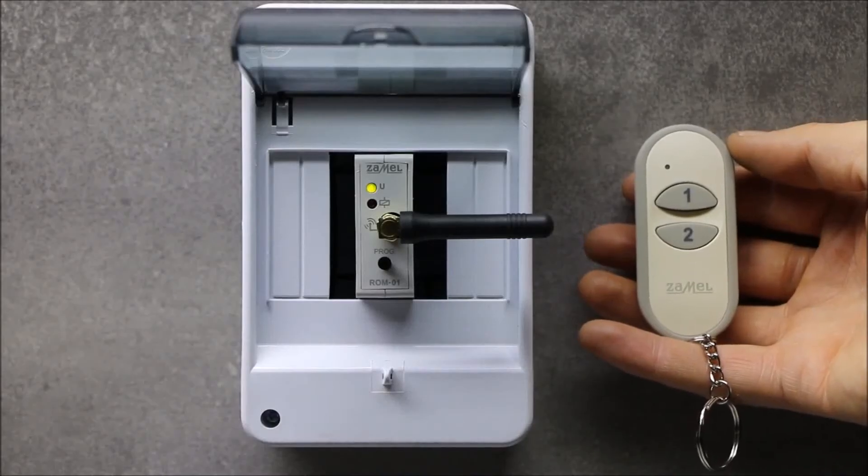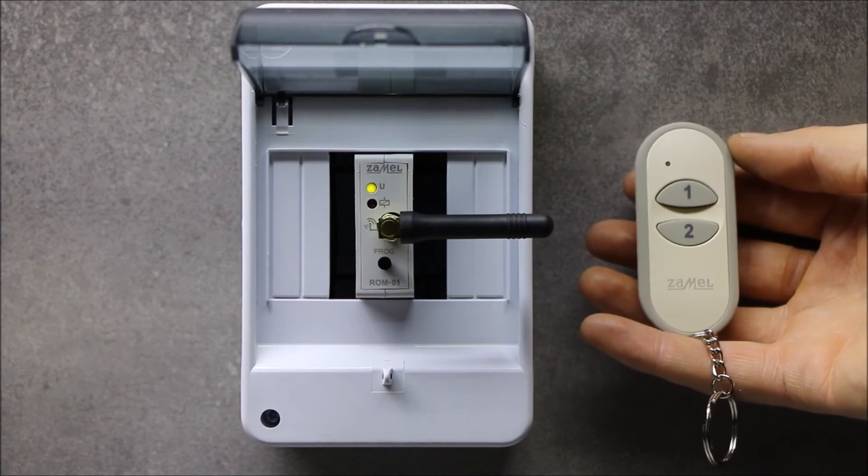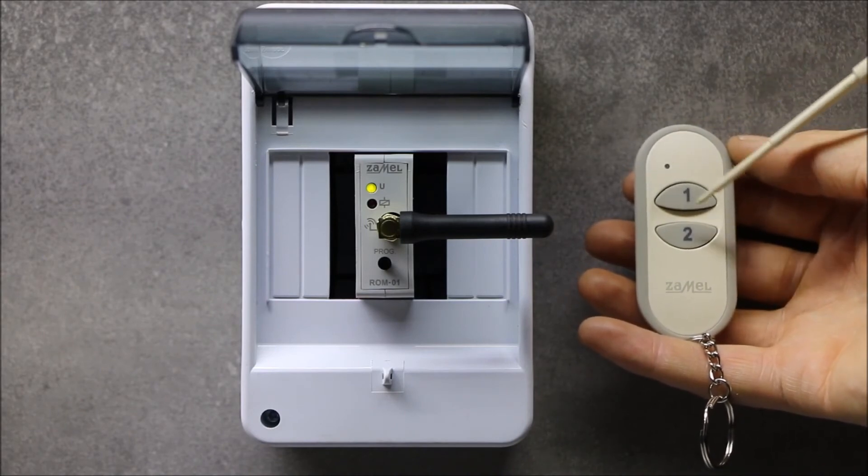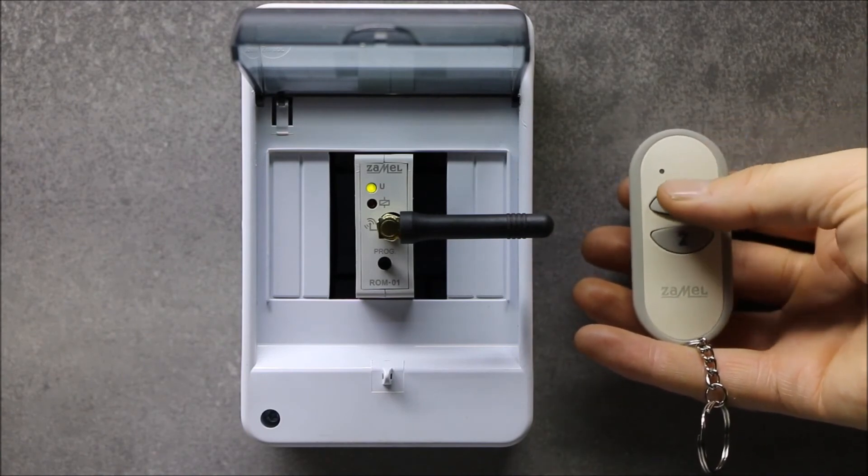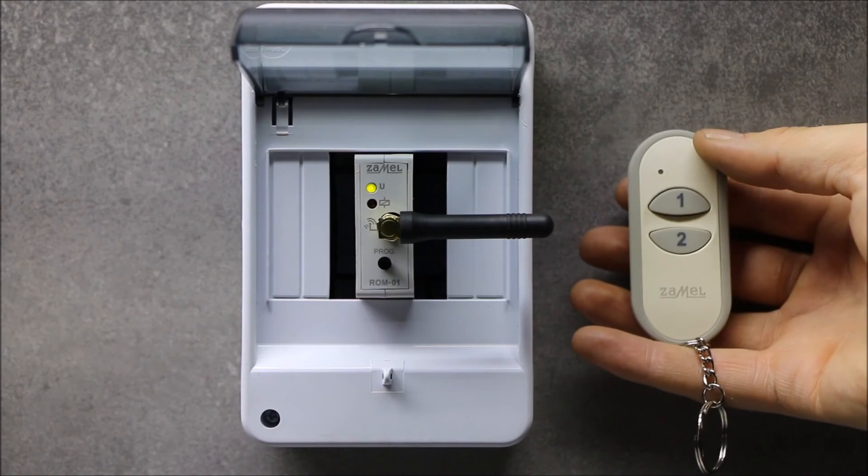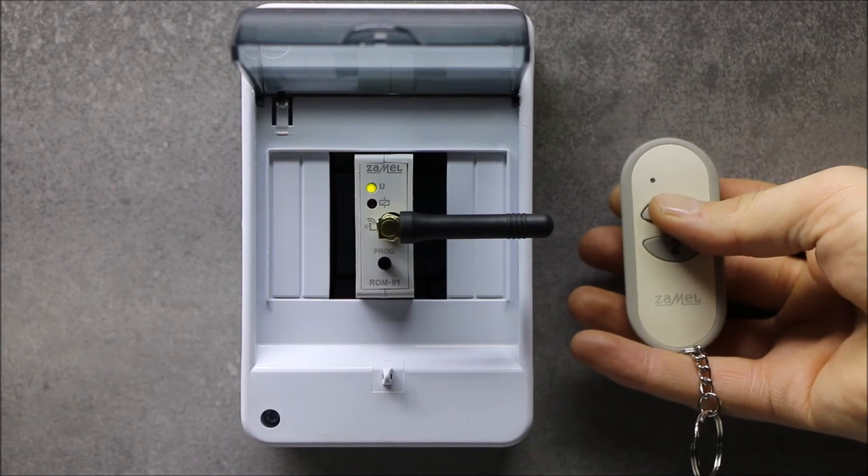In order to program the mono-stable mode, press and hold the button to be paired with the receiver, same as in bi-stable mode first. In this case, it will be button number one of the remote controller. While holding this button pressed, begin the programming procedure by pressing the PROC button on the receiver.